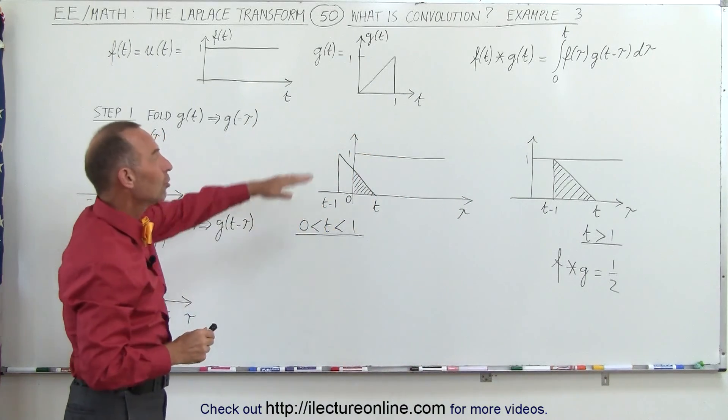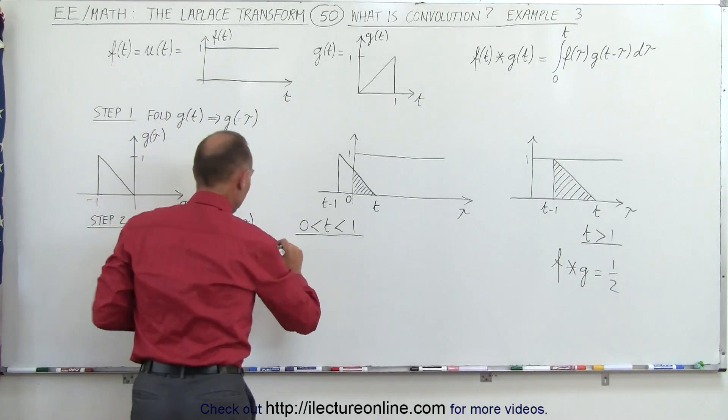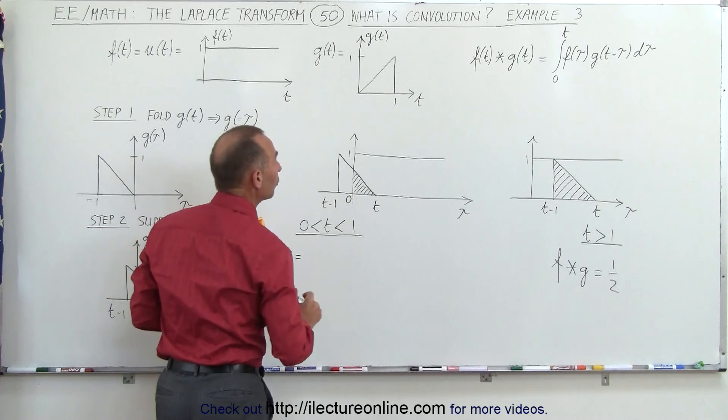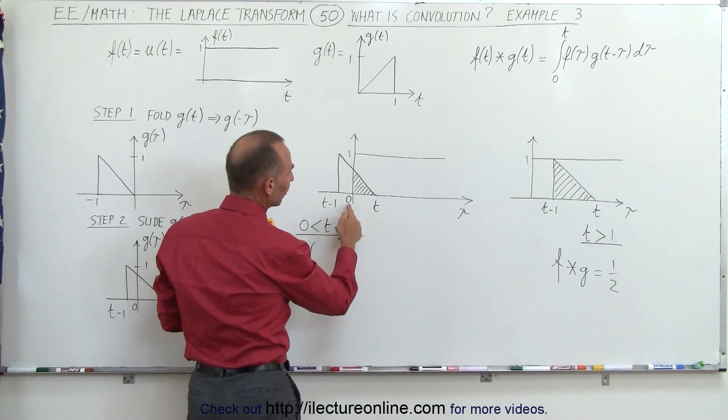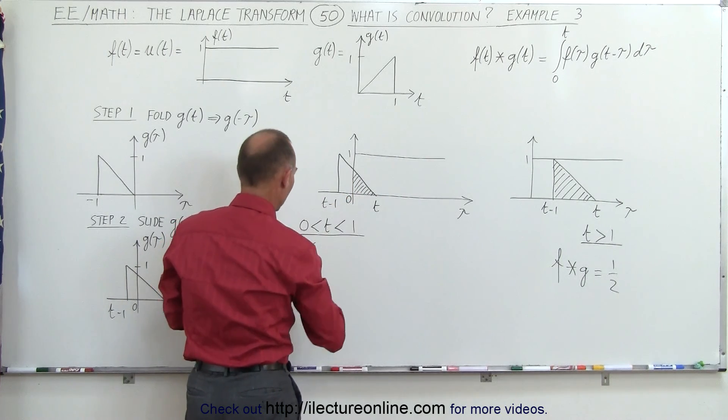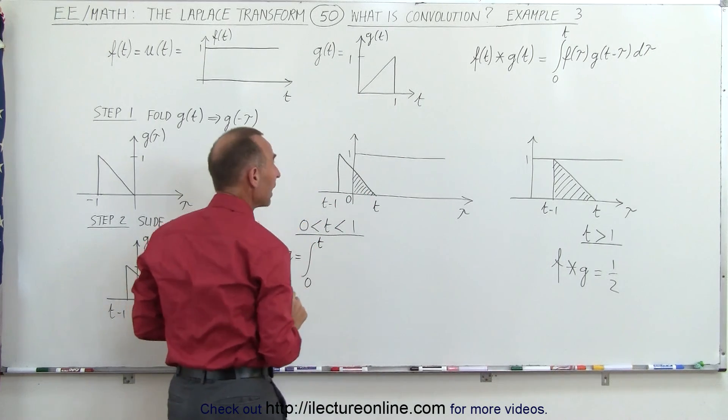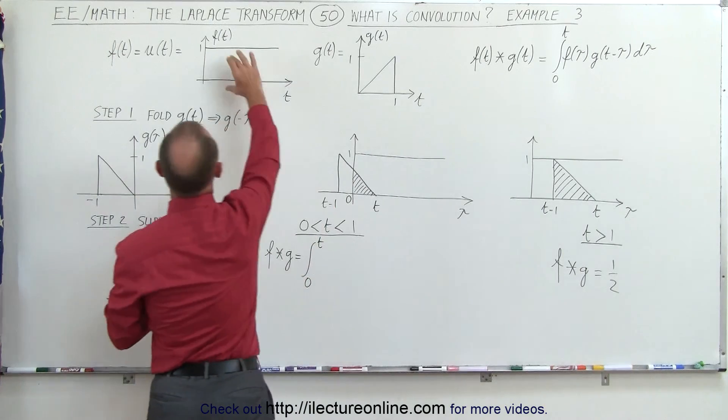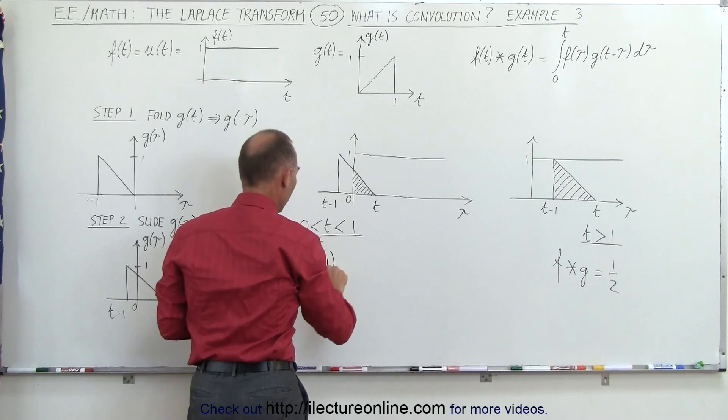But here, we need to use the definition, the integral. So let's go ahead and do that. f convolved with g is equal to the integral. Now the limits are going to be from 0 to t. The lower limit that starts at 0, and the upper limit is at t. So we're going to integrate from 0 to t. Turns out it's the same limits as what we have over there. f of tau. Now f of tau is right here. That's always equal to 1. It doesn't change. So that's easy, 1.